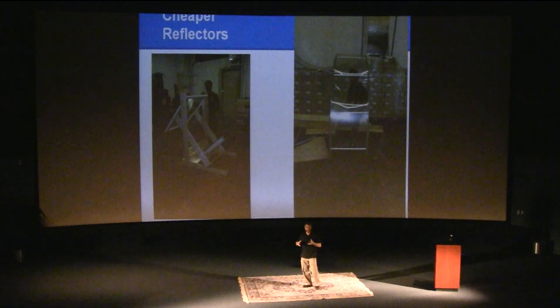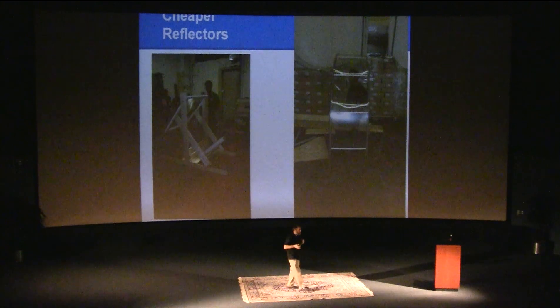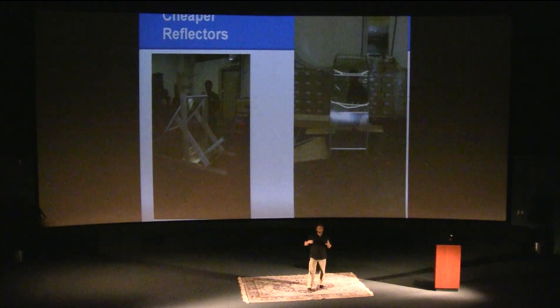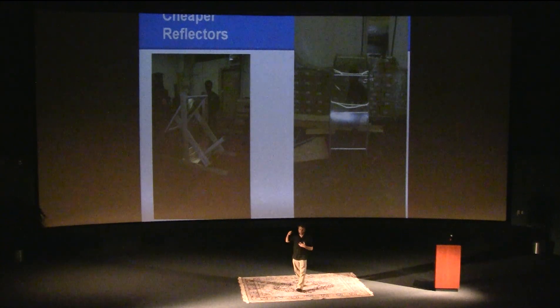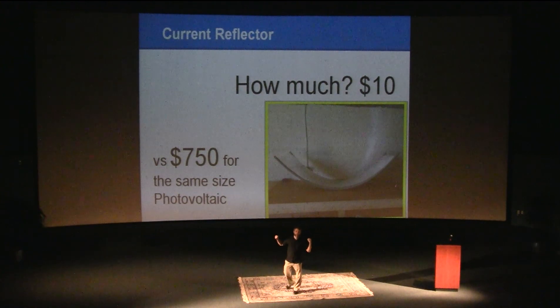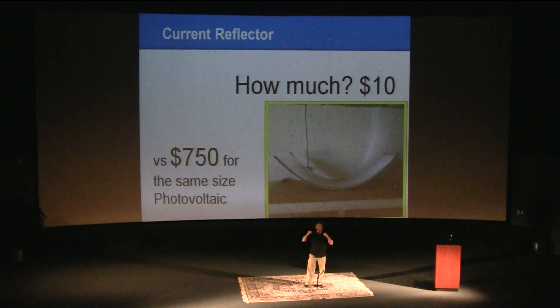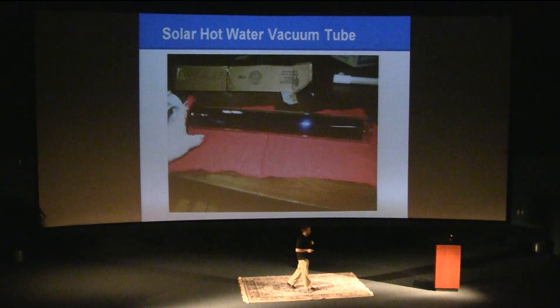I started with Fresnel lenses — that's kind of where every solar guy starts. They have a tremendous amount of power, but they're kind of complicated to use. So I started messing around with different types of reflectors, and this is what I've come up with. This reflector is about 8 feet wide by about 2 feet deep, costs 10 bucks. The equivalent surface area of sunlight from a photovoltaic would cost 700 bucks — this is a major difference. It's not perfect, but it is so much cheaper that we can just make a lot more of them.